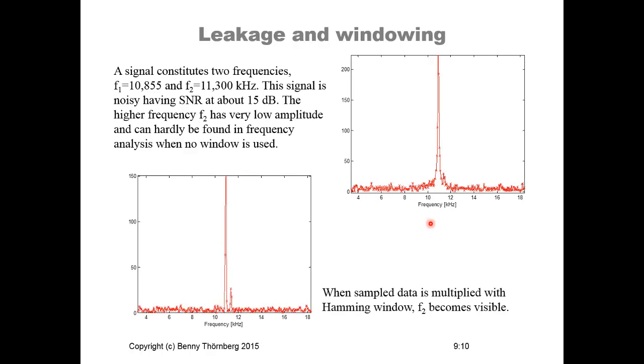And now we are applying the Hamming window before we do this Fourier transform analysis. And all of a sudden the response of the side lobe seems to have less of impact such that it is possible also to see and clearly detect the second frequency component of the signal. But still, of course, the noise is present.